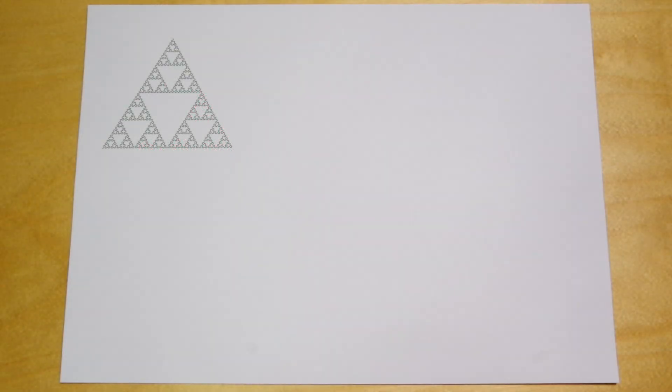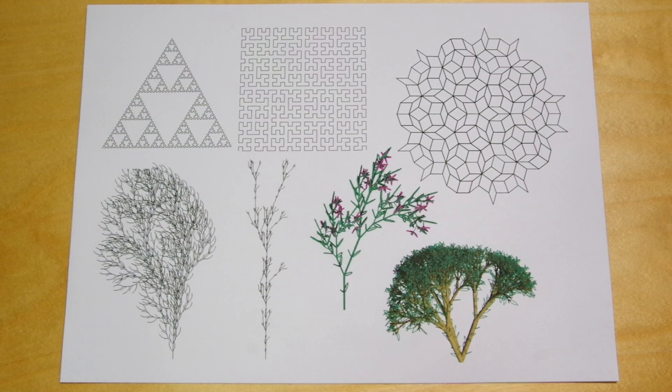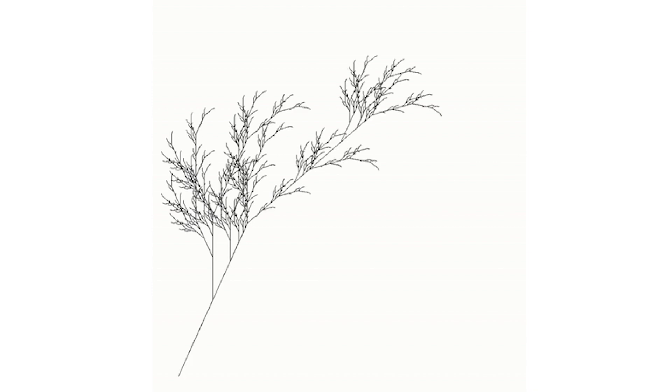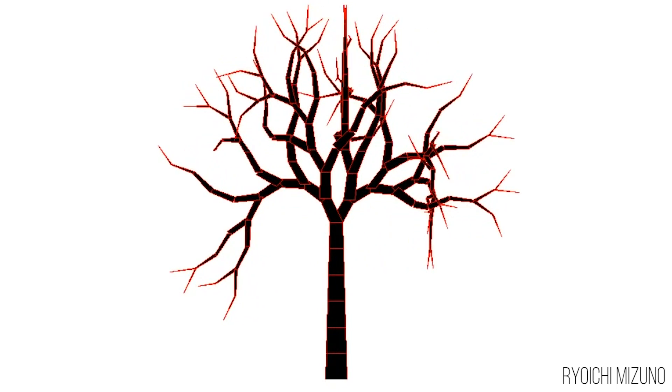So we've seen how you can draw one fractal with L systems. There are many others you could also draw. For example, the Sierpinski triangle, the Hilbert curve, or Penrose tiling. You can also apply them to Lindenmayer's original inspiration, plants. People have used L systems to draw leaves, bushes, and trees, both as 2D line drawings, and 3D models that could be used in video games or animation for movies and TV. But since I'm working on paper, I'm going to stick to 2D drawings. So let's have a go at drawing a tree.